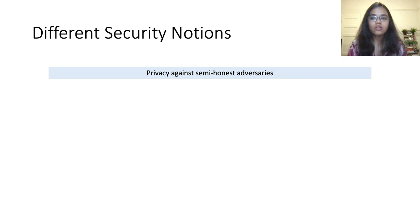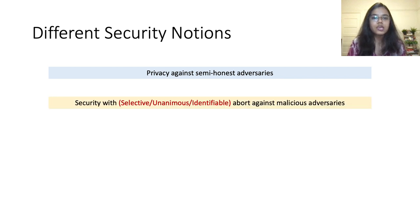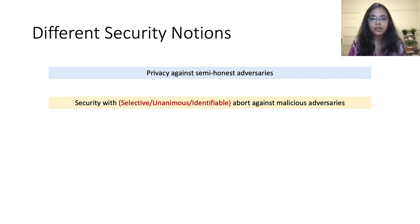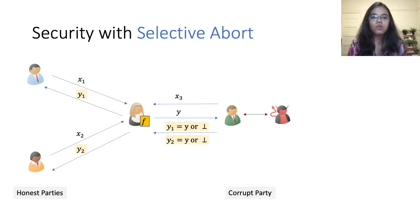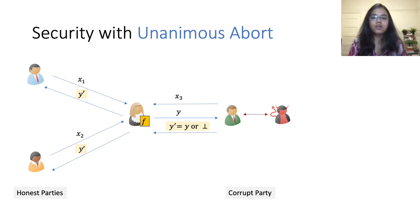The simplest one is privacy against a semi-honest or honest-but-curious adversary. The case of malicious adversaries is slightly more complex. The most common notion is security with abort, where the adversary can prevent the honest parties from learning the output by prematurely aborting the protocol. Three variants are often considered: security with selective abort, where the adversary may selectively force a subset of honest parties to abort; and security with unanimous abort, where the adversary may prevent honest parties from learning the output but all honest parties agree on whether or not to abort.